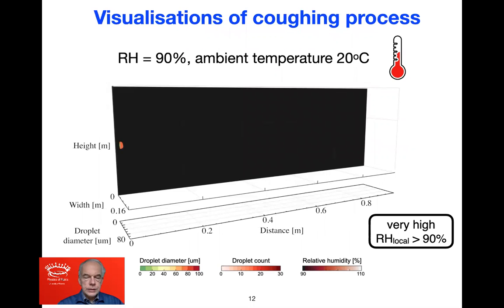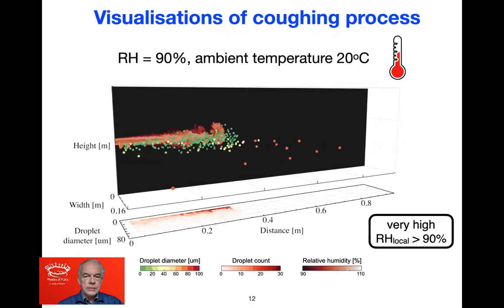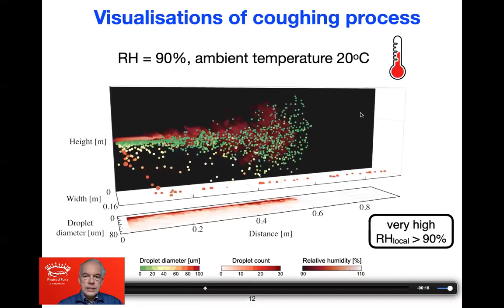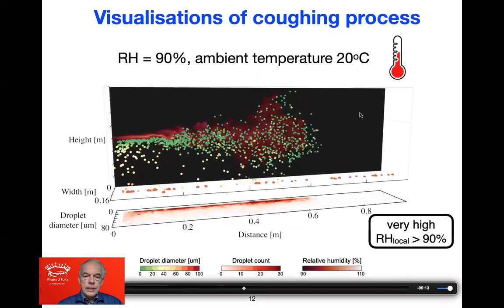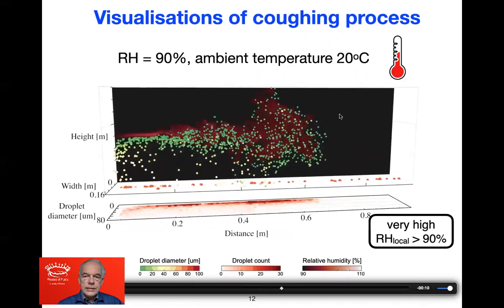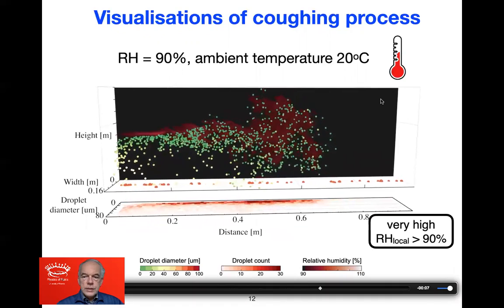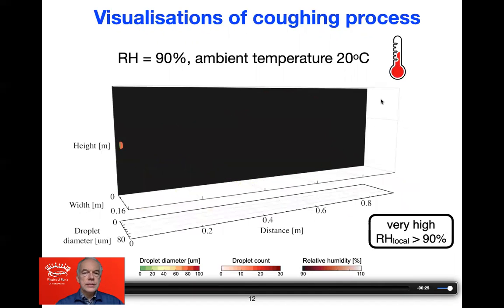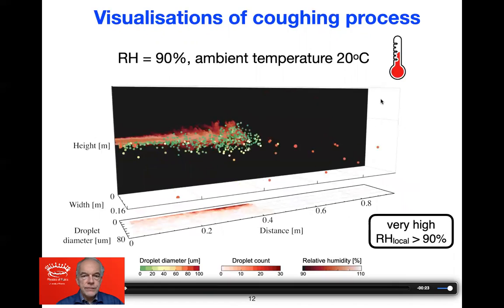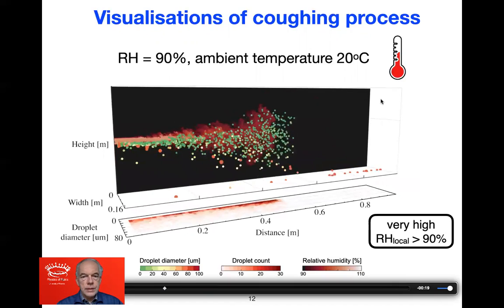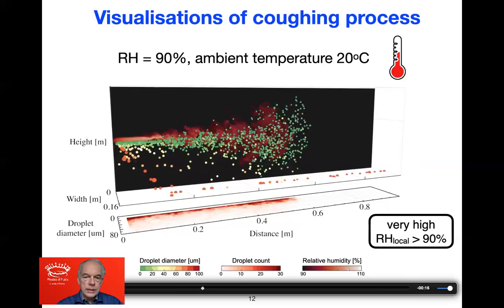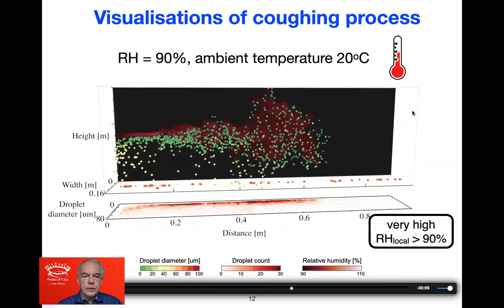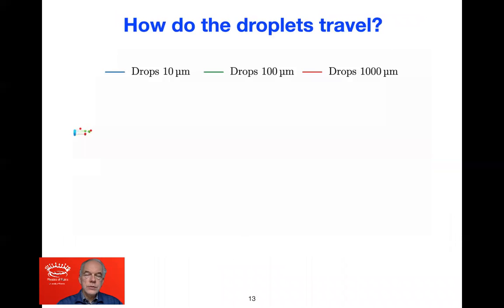Here you see a simulation. Droplets are injected from the left. The background color represents relative humidity: black is 90%, the background humidity, while white and light red indicate higher humidity. You can see very high local relative humidity, much larger than 90%, due to the humid puff expelled when speaking or coughing. The green droplets are the small ones, which stay within the puff, whereas the red ones are the heavy droplets that fall to the ground.